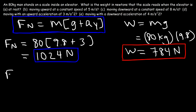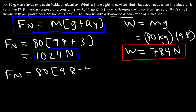For part e, the elevator is accelerating downward, so the acceleration is negative: ay = -4 m/s². Using the formula: 80 times (9.8 - 4) = 80 times 5.8 = 464 newtons. The scale reads 464 newtons, which is less than the person's true weight.